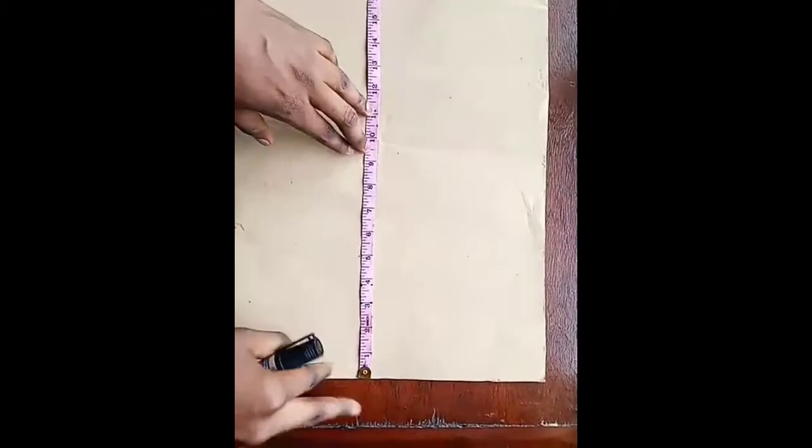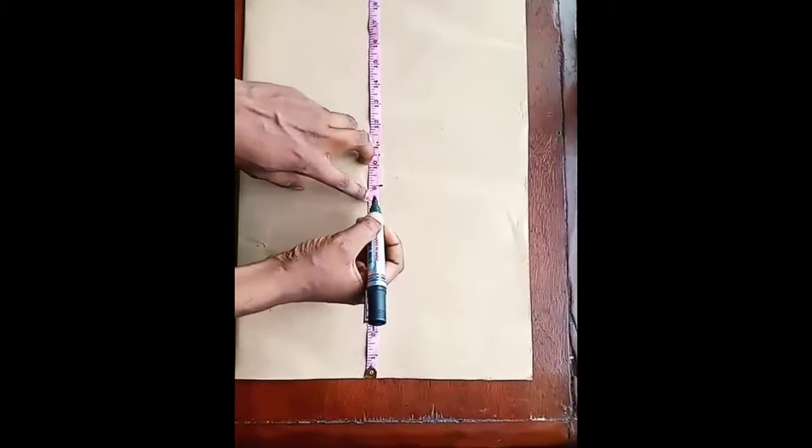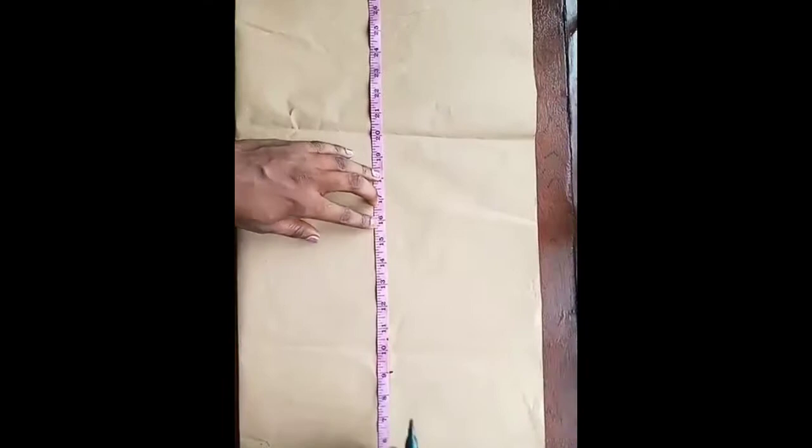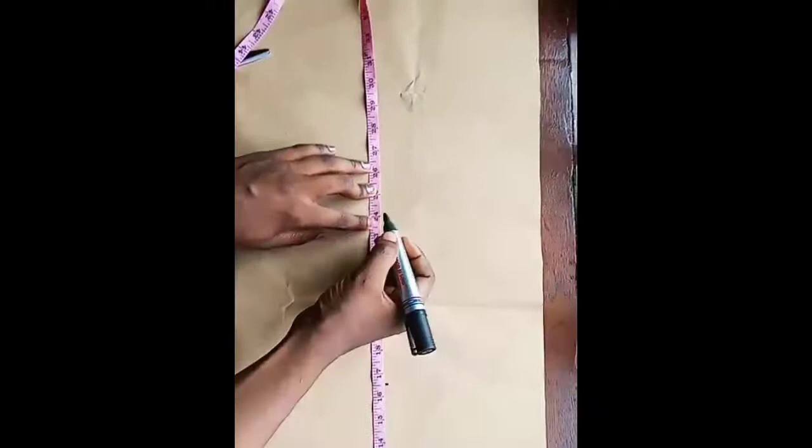I'll be taking 9 inches down to my chest point. Then from my chest point, I'll be coming down to my waist. I'll be taking 16.5 for my waist. And to my hip I'll be taking 24 for my hip, then the full length, that's 37.